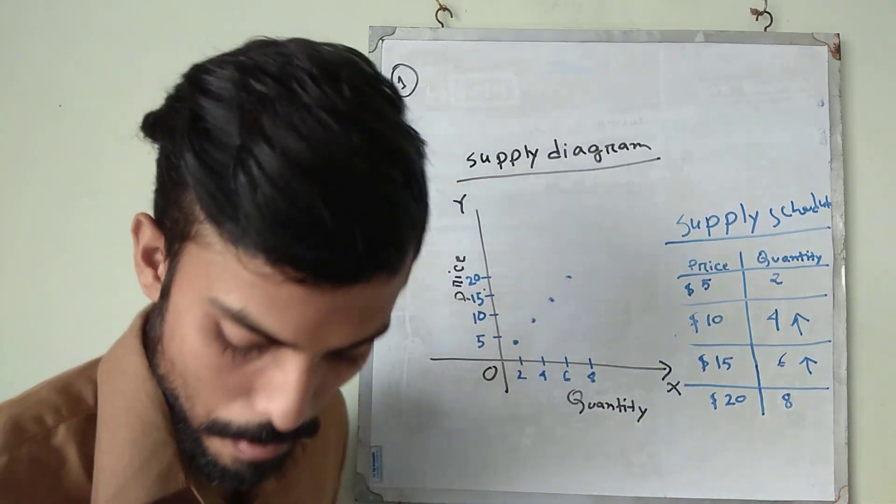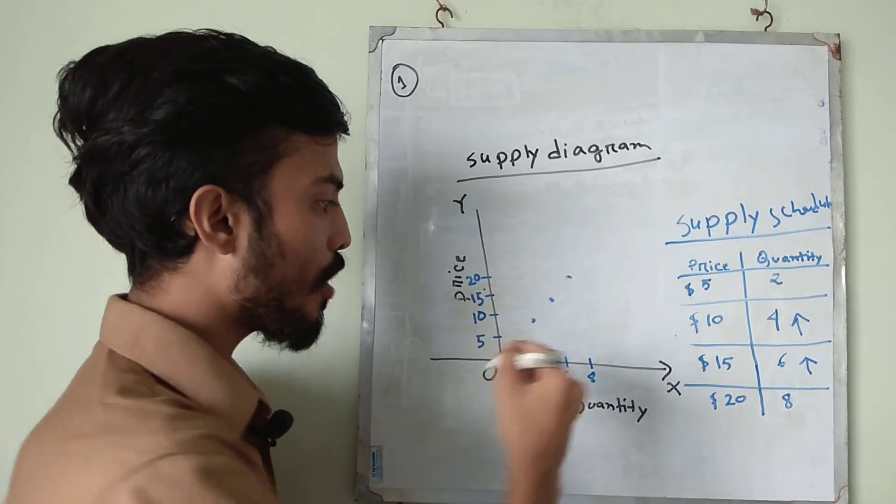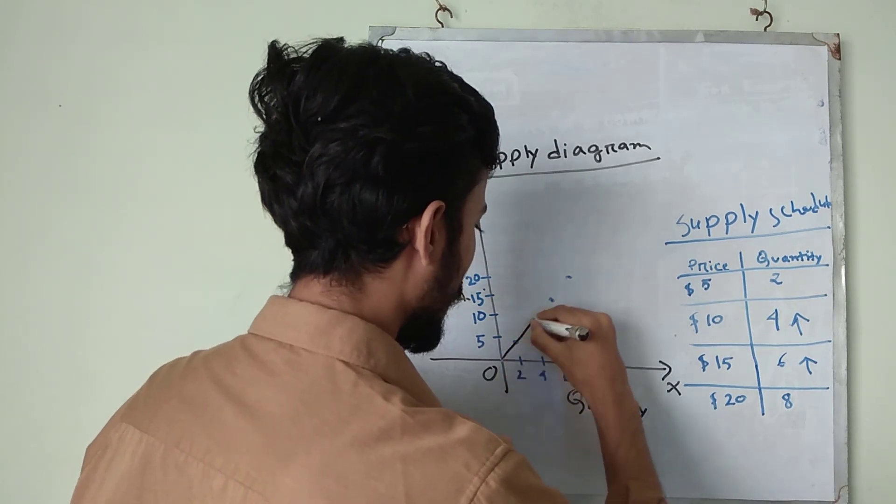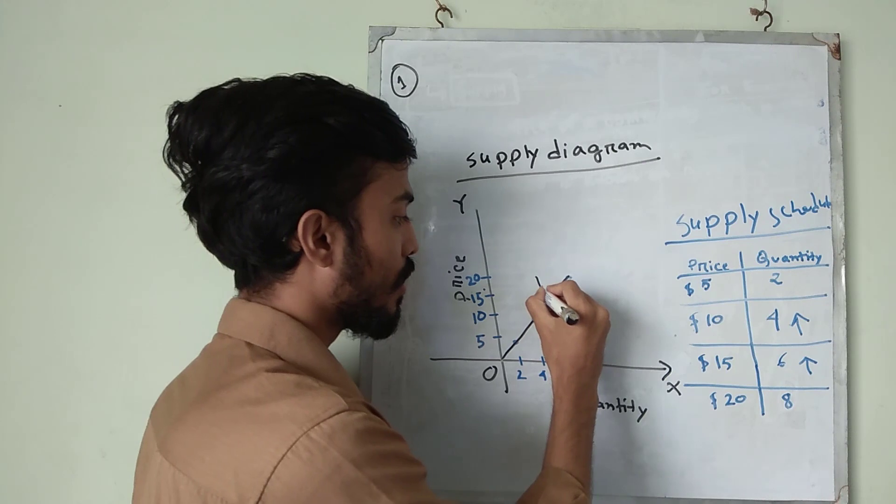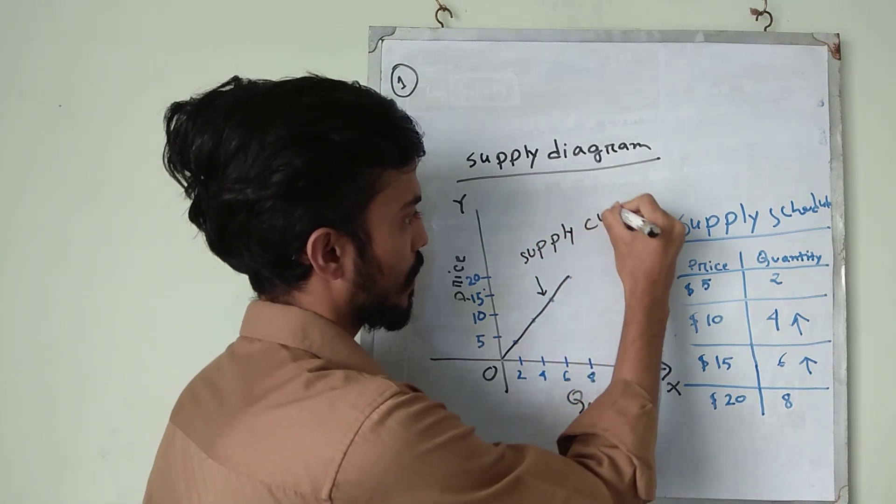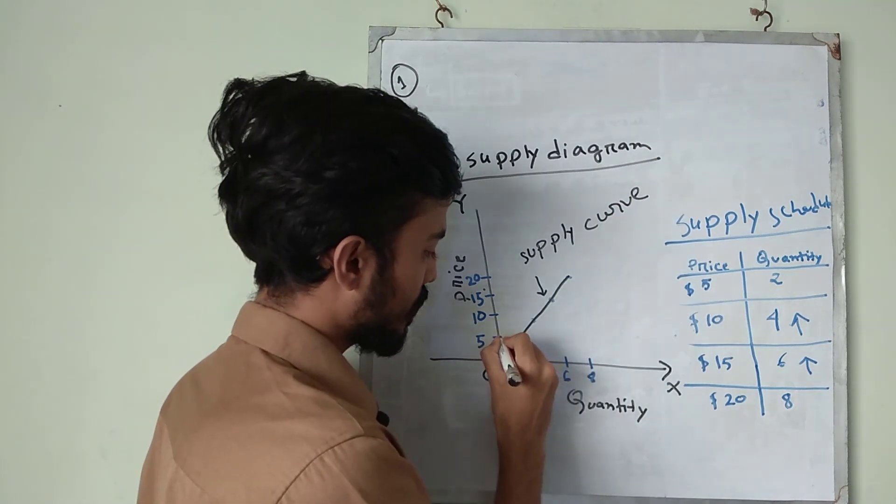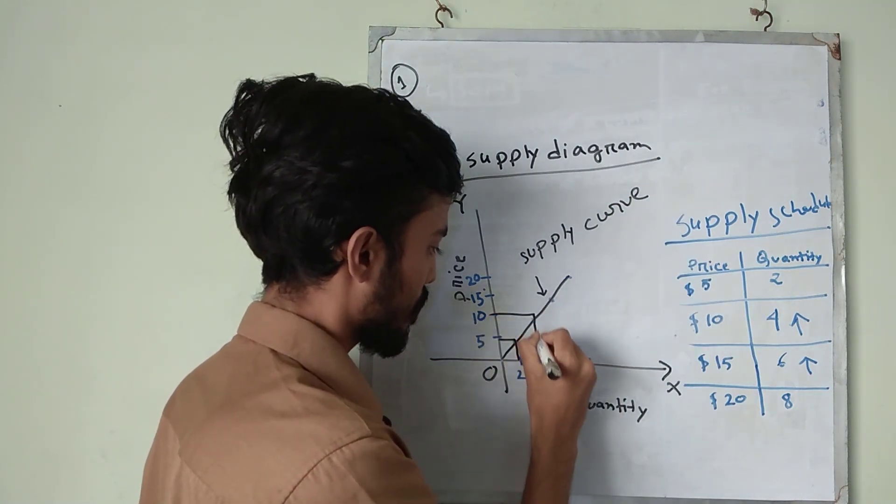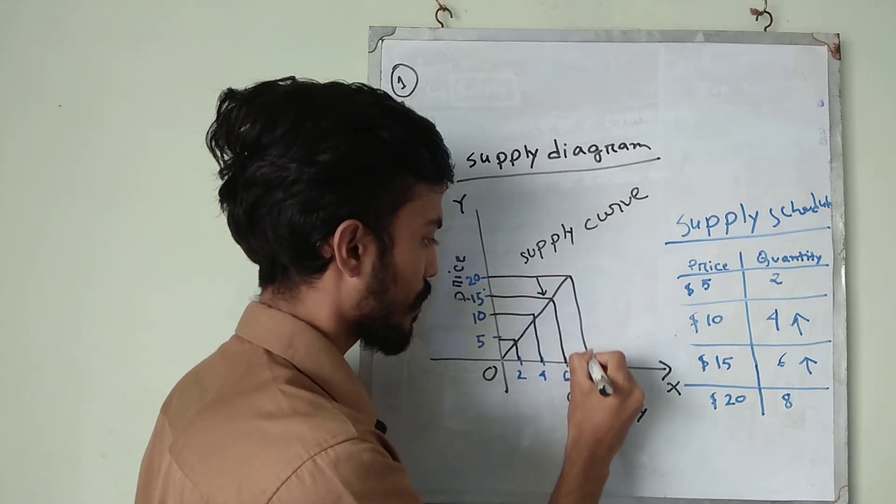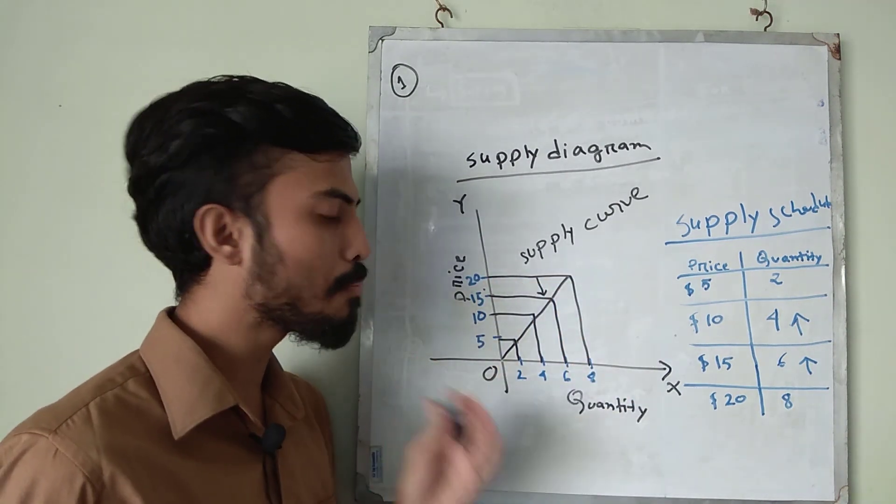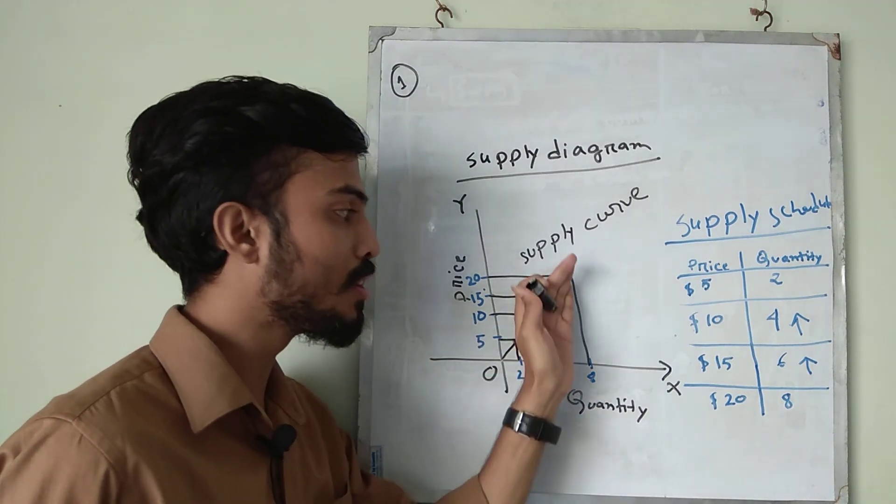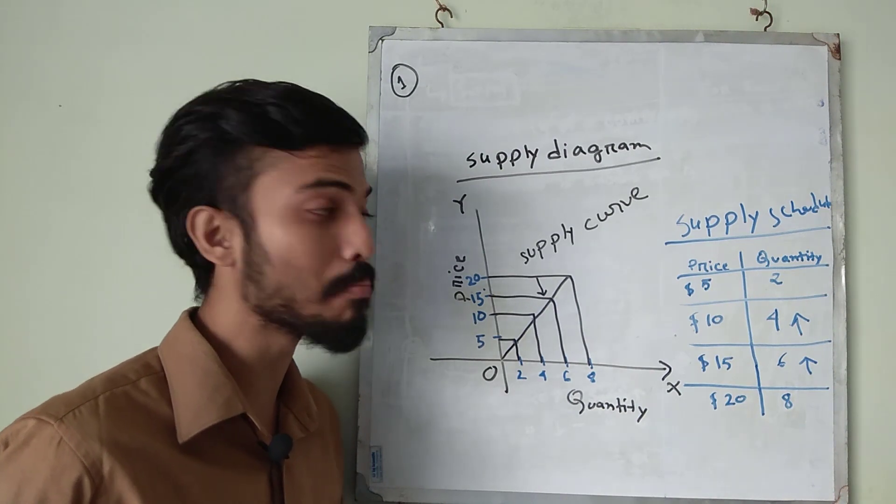Now if we add these points, we will find a curve. And this is known as supply curve. Yes, here. We will add this point. So this is supply curve. And supply curve shows upward trend, upward trend. I hope that you understand supply.